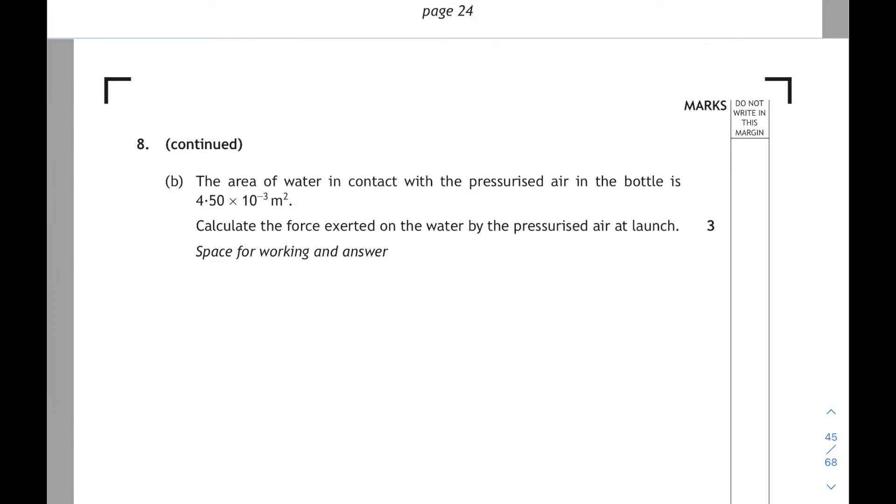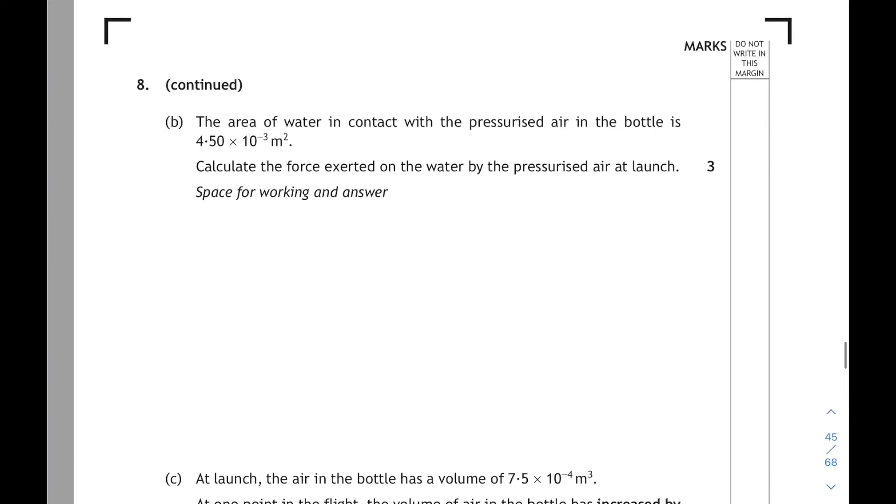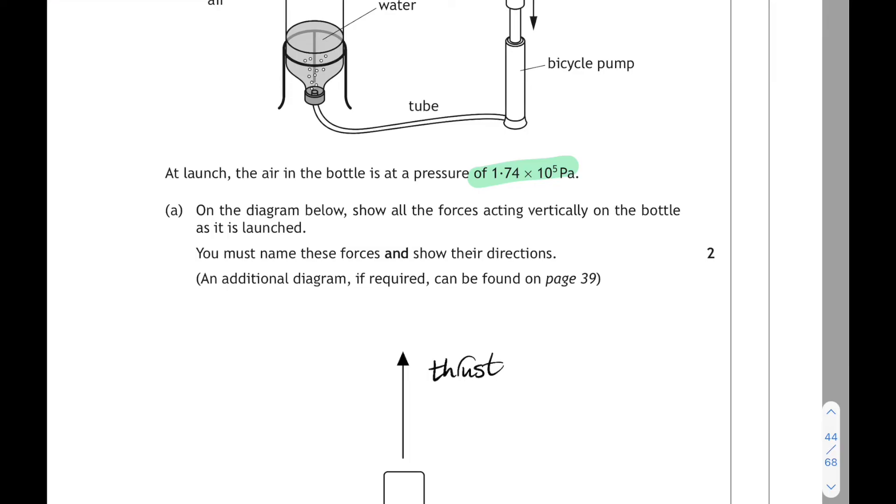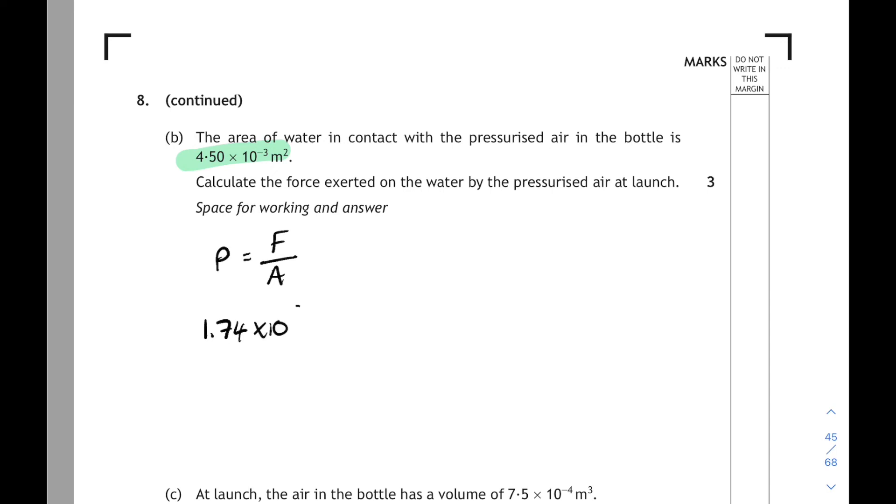Eight part B. If the area of water in contact with the pressurised air in the bottle is 4.5 times 10 to the minus 3 square metres, calculate the force exerted on the water by the pressurised air at launch. Well, this is force, pressure and area. So we're going to go for our p equals f over a relationship. And we're looking for the force exerted on the water. And there's the pressure at launch. 1.74 times 10 to the 5. And that's equal to the force over the area. 4.5 times 10 to the minus 3. Don't forget you're getting one mark for the relationship and one mark for the sub. Then I would rearrange it for f and do the calculation. And if you do that on your calculator, you're going to get an answer of 783 Newtons. One mark for the correct answer with the correct unit.